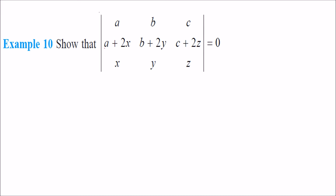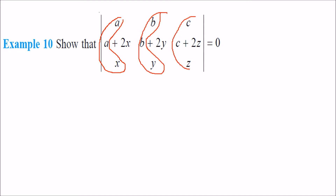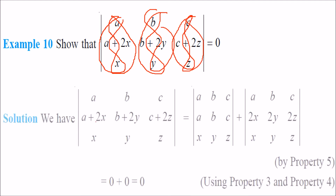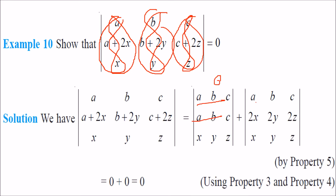We have to show that this determinant equals 0. We split it: take A, A, X and B, B, Y and C, C, Z as one determinant, and A, 2X, X and B, 2Y, Y and C, 2Z, Z as another. In the first case, two rows are similar, so it is 0. In the second, if we take 2 common from the second row, we get rows X, Y, Z repeated, so those two rows also become equal and the determinant is 0. Therefore 0 plus 0 equals 0.